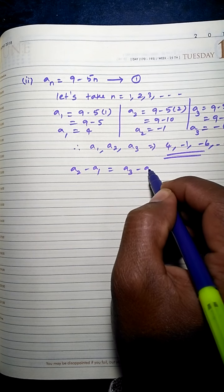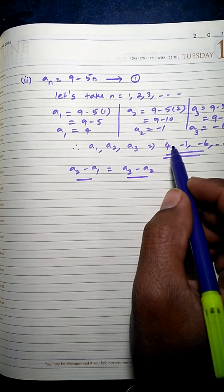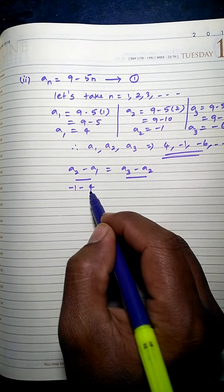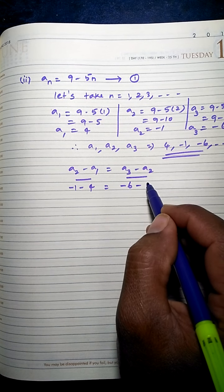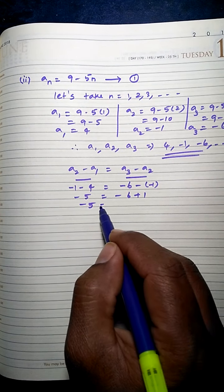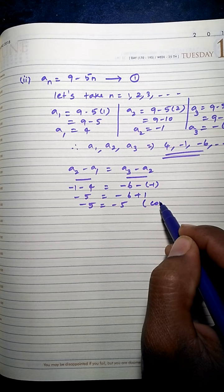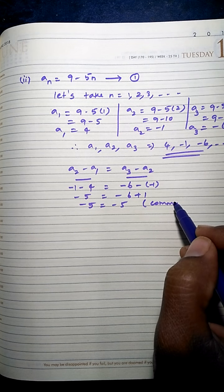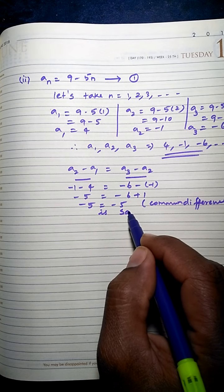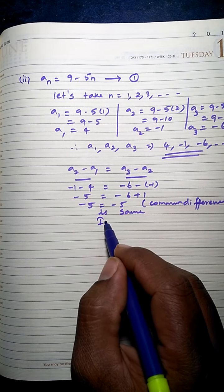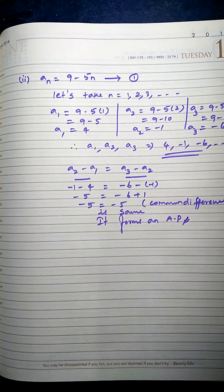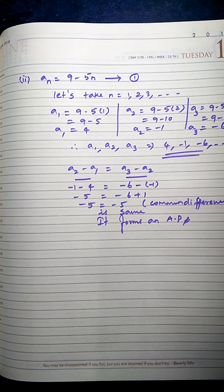Let's find the common differences. a2 − a1 = −1 − 4 = −5, and a3 − a2 = −6 − (−1) = −5. Since both common differences are equal to −5, the common difference is the same, so it forms an AP.